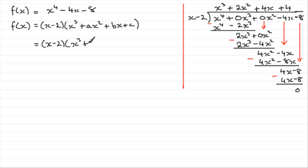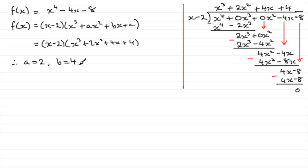So f of x equals x minus 2 multiplied by our quotient: x cubed plus 2x squared plus 4x plus 4. Comparing this to the bracket x cubed plus ax squared plus bx plus c, the coefficient of x squared gives a equals 2, the x term gives b equals 4, and the constant gives c equals 4. Now I'll show the second method — expanding the bracket and comparing coefficients.